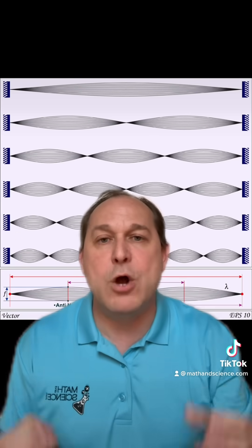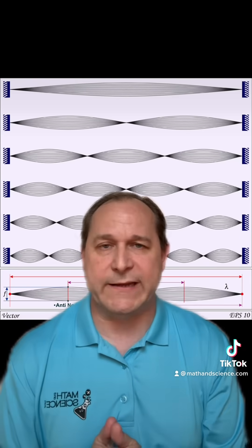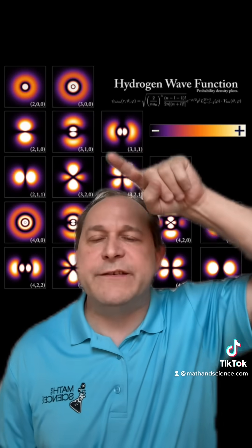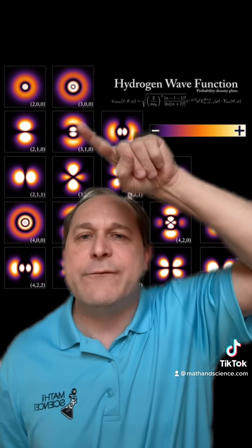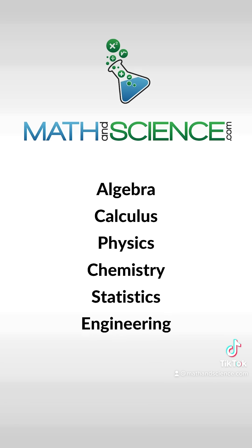You can excite different modes of oscillation with higher energies in a vibrating string. When you solve the Schrödinger equation for the electron's wave function, there are many additional wave structures that can be excited in three dimensions — all of these lobed and spherical structures. When these lobed structures overlap with adjacent atoms, you can get a chemical bond. Learn anything at mathandsciencedot com.